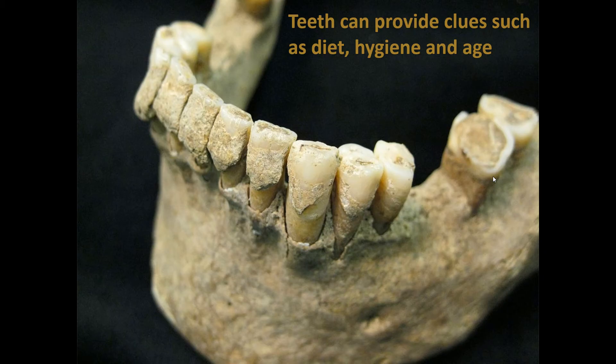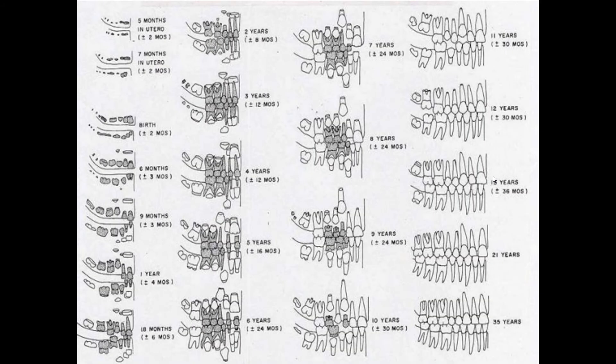Let's talk about teeth. Teeth are often found attached to the mandible of a skull, and they can provide quite a few clues for anthropologists — for example, diet, hygiene, and age are all often determined by observing teeth. Teeth develop throughout a person's life, and forensic anthropologists use their knowledge of growth and development to get an estimation of a person's age within one to two years — not an exact age, but they can get pretty close. Anthropologists are able to use growth and development information from known individuals to compare to unknown skeletal remains to get an idea of hygiene and age.